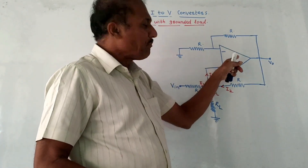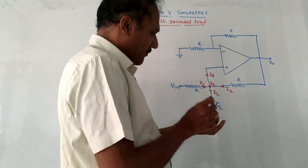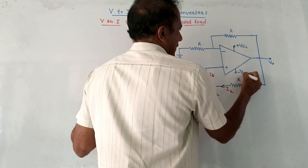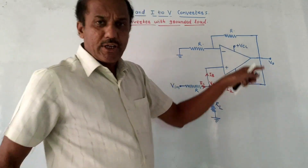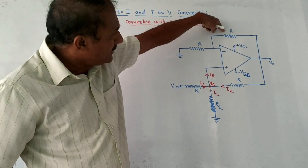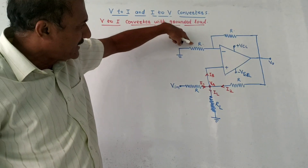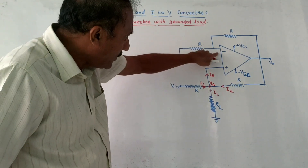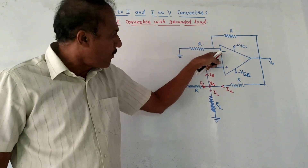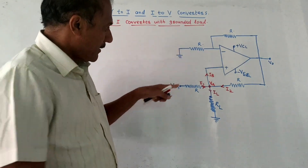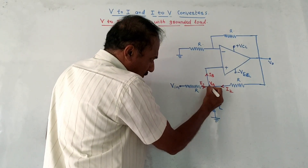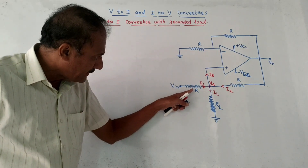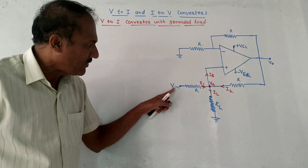This is the corresponding diagram. Observe the diagram carefully — this is the op-amp. Naturally, we need to show plus VCC and minus VEE. This resistance is the feedback resistance whose value is R. Similarly, this resistance also has value R. RL is the load resistance. We are grounding the inverting terminal — that is, the negative terminal of the op-amp is connected to ground through resistance R. The positive terminal is connected to node voltage VA, and through resistance R, this point is connected to input voltage VIN.